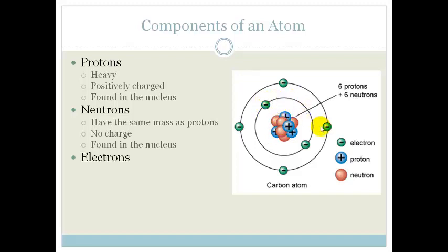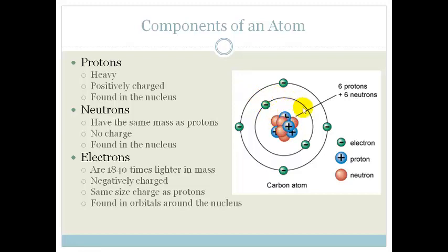Now let's look at electrons. In this picture the electrons are drawn a little bit smaller than the protons. The reason for this is this is not obviously to scale. Electrons are 1,840 times lighter in mass. They are negatively charged, but they have the same size charge as a proton. So if you've got a plus 1 proton and a minus 1 electron, they would cancel each other out because they are the same size charge. And the electrons are found in the orbitals around the nucleus.